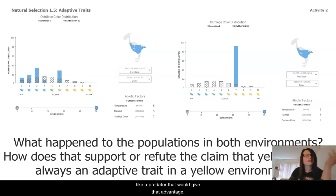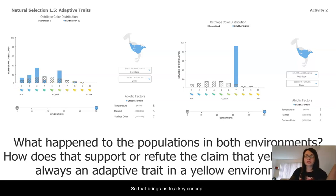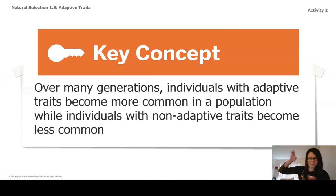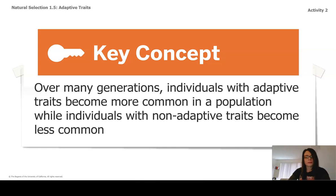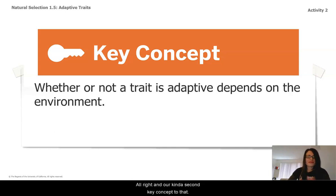There would have to be something like a predator to give that advantage. That brings us to a key concept: over many generations, individuals with adaptive traits become more common in a population, while individuals with non-adaptive traits become less common. Go ahead and pause and write this down. And our second key concept: whether or not a trait is adaptive depends on the environment.